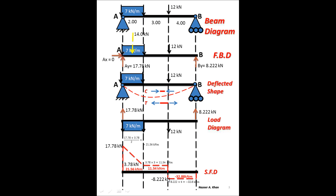We are not influenced by any force between there and the end, so we stay constant at -8.22 kN. At the end, we are bumped up by 8.22 kN. Importantly, we started at zero and ended at zero — this gives us confidence that the work is done correctly. We have a check. However, this does not mean the moment diagram will also close to zero; if it doesn't, our reactions were calculated incorrectly.